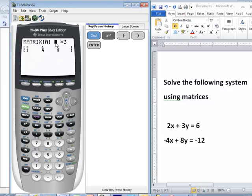We have two, which represents the number of rows that we have. Three represents our number of columns that we have. This is our augmented matrix, so we want to enter in just the coefficients.